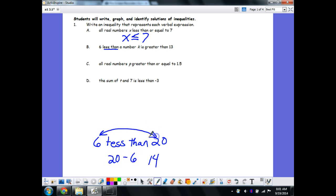So the same thing is done here: 6 less than a number k is k minus 6, not 6 minus k. Just be careful with that piece. And then it says 'is greater than,' and since it's not 'greater than or equal to,' we do not put a line underneath it: 13.